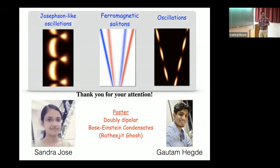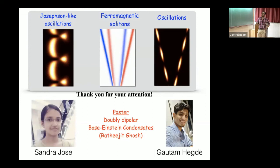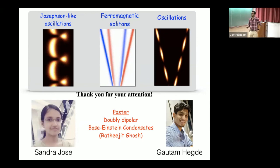To conclude, overlapping spin-one solitons exhibit richer scenarios compared to scalar solitons. The three striking phenomena are: Josephson-like oscillations, conversion to ferromagnetic solitons, and generation of oscillotons. This work was done by my master's student Gautam and my PhD student Sandra. There is also a poster here on dipolar condensates.